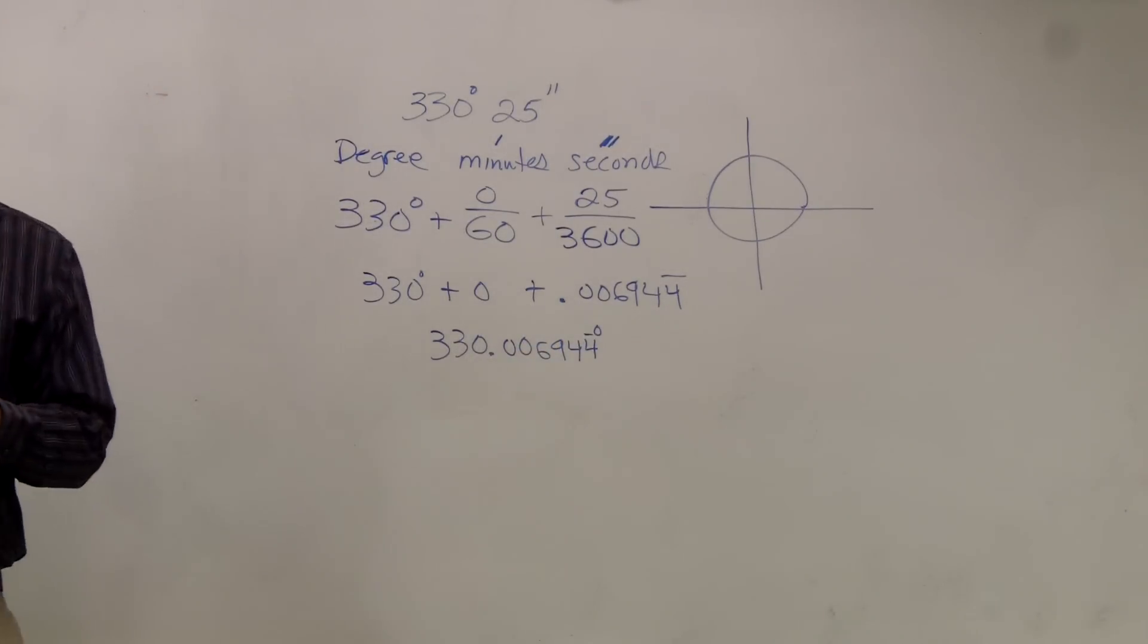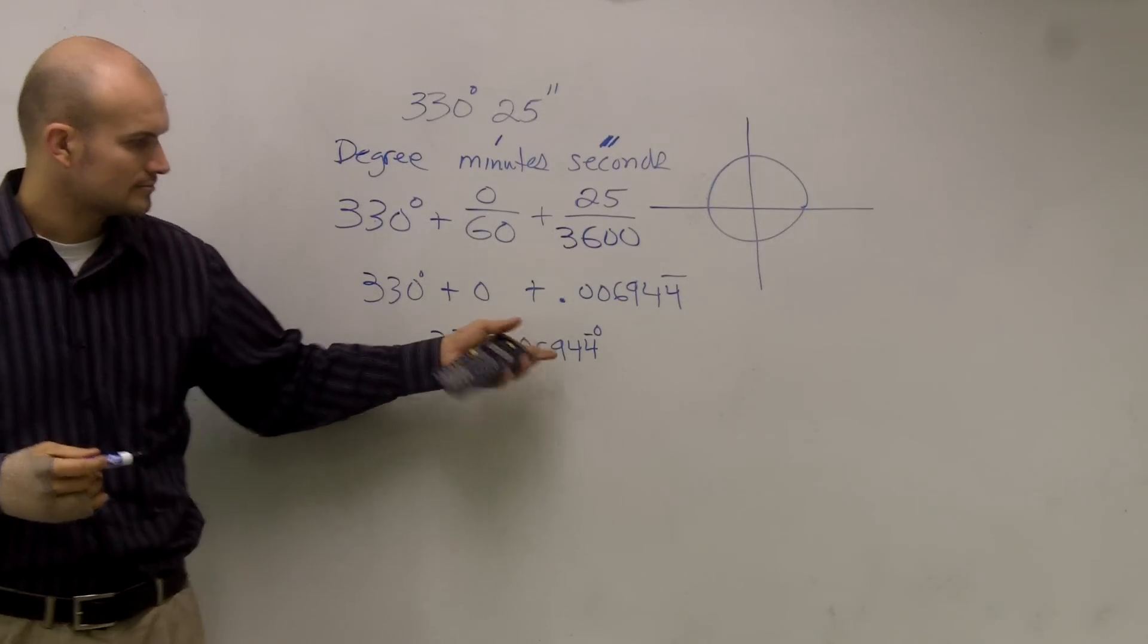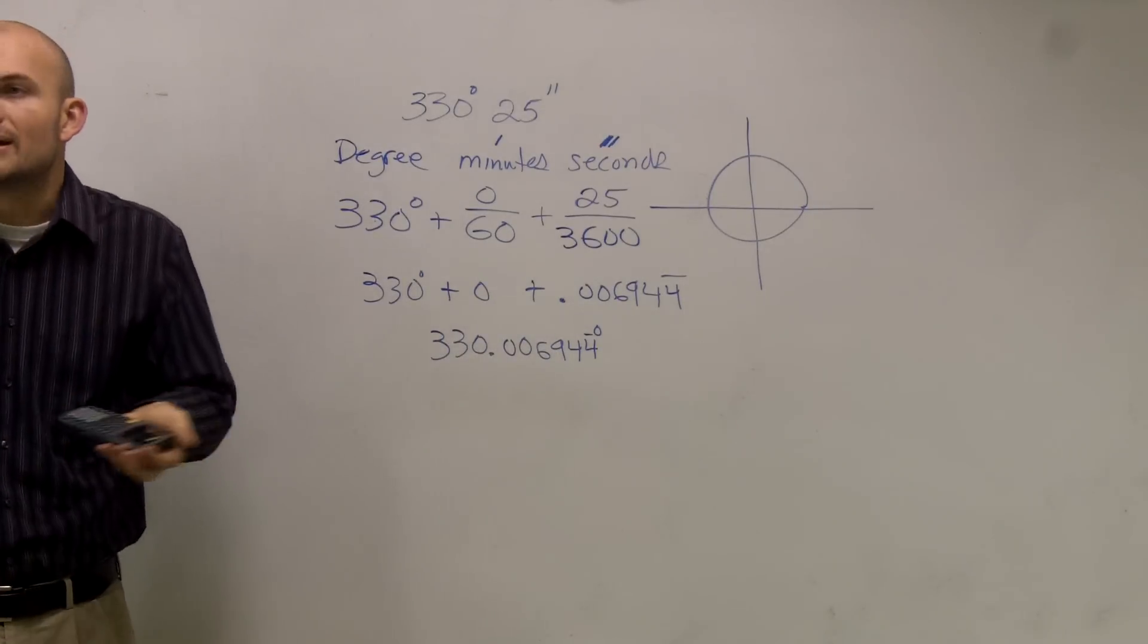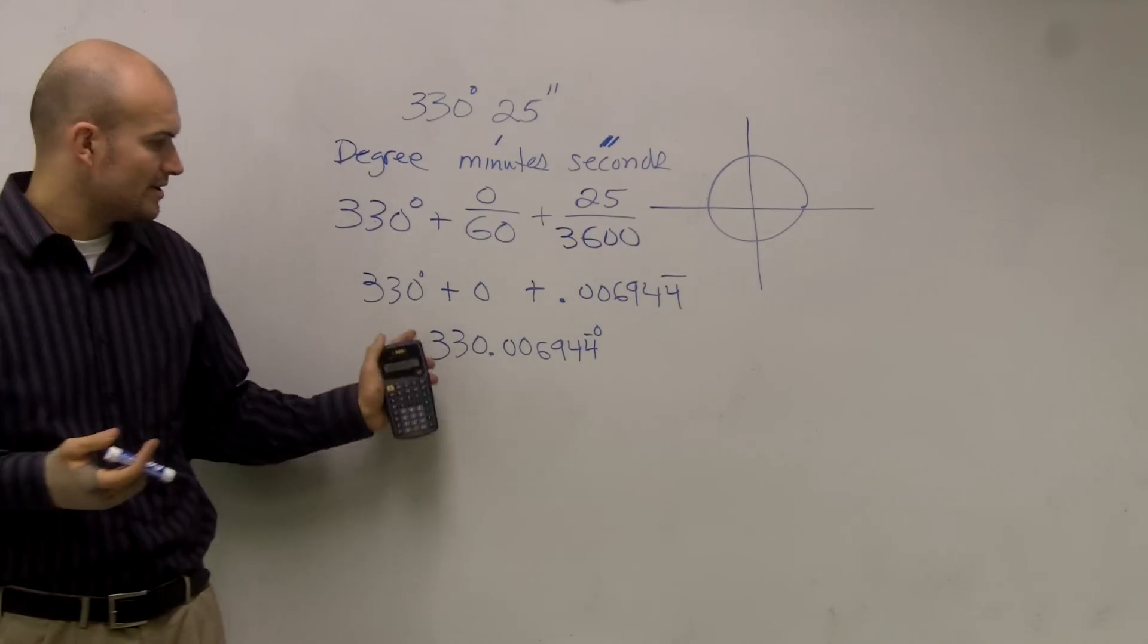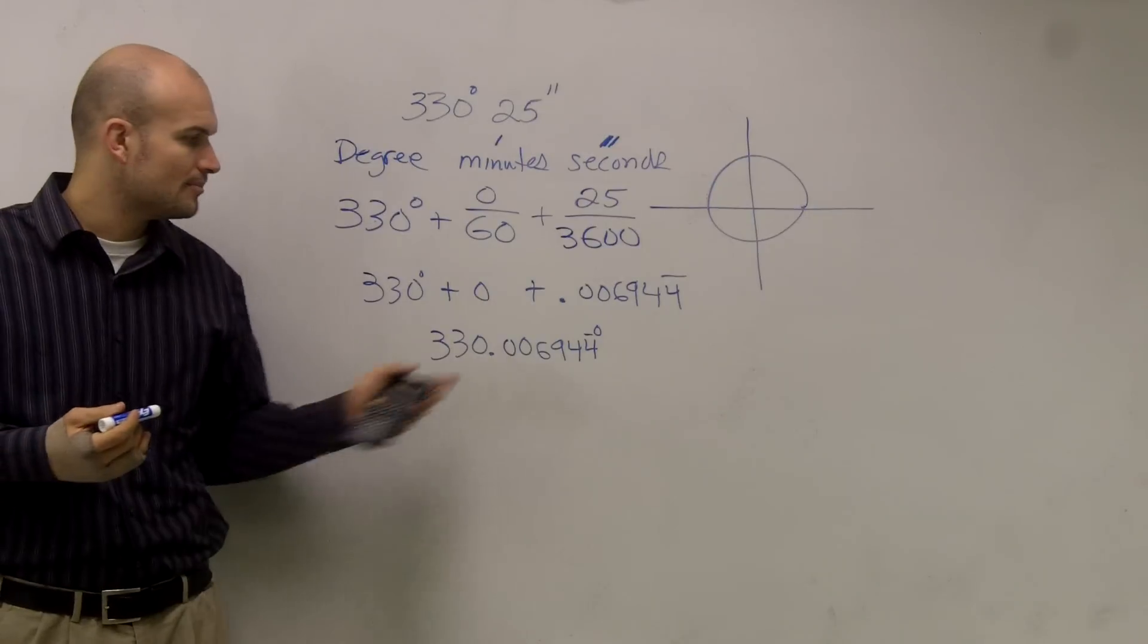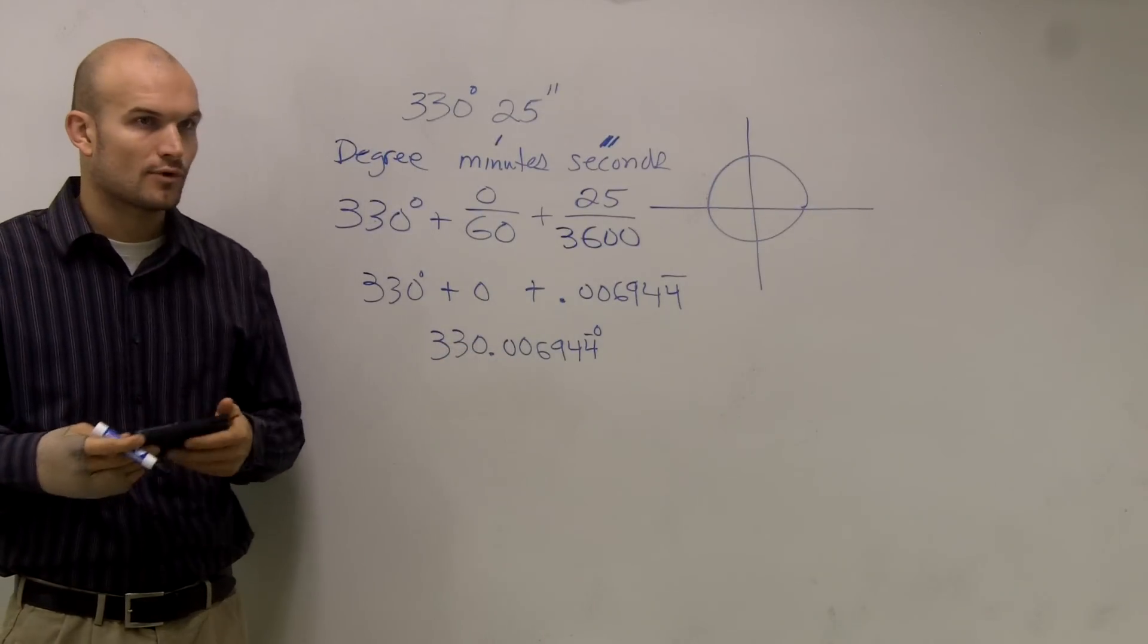I'm rounding it up to 0.007, but it's true, you can approximate it. It depends on what we're doing, what the answer is asking to approximate to what value. So you can see it's going to be 330.00694 repeating degrees.